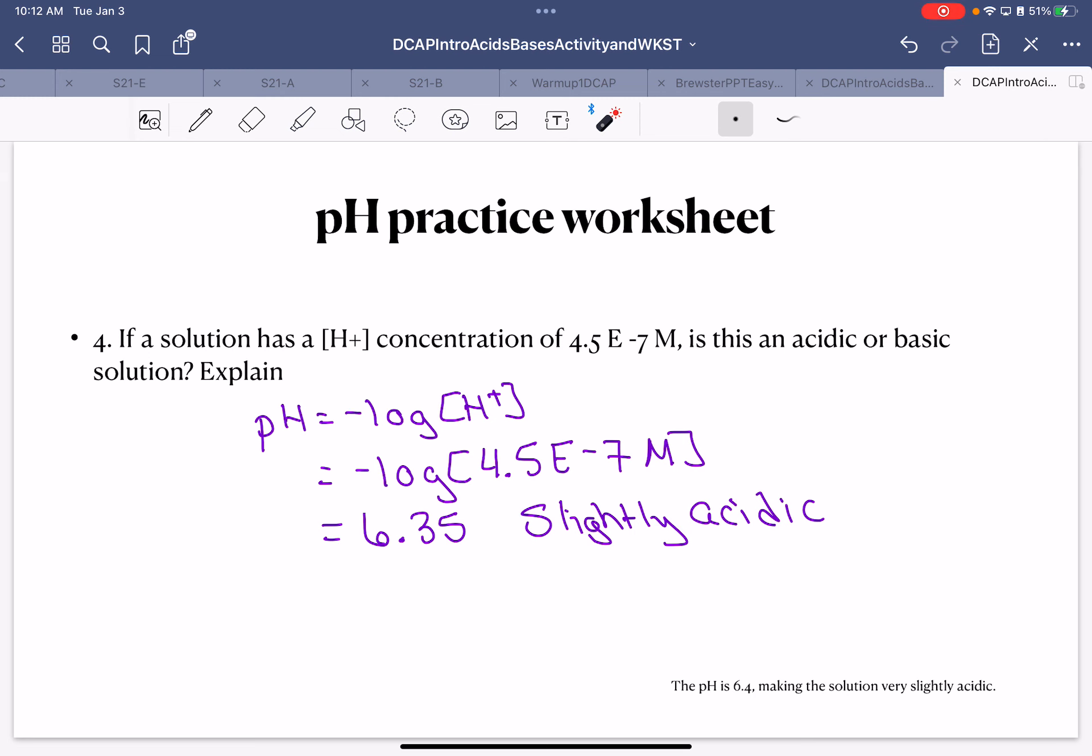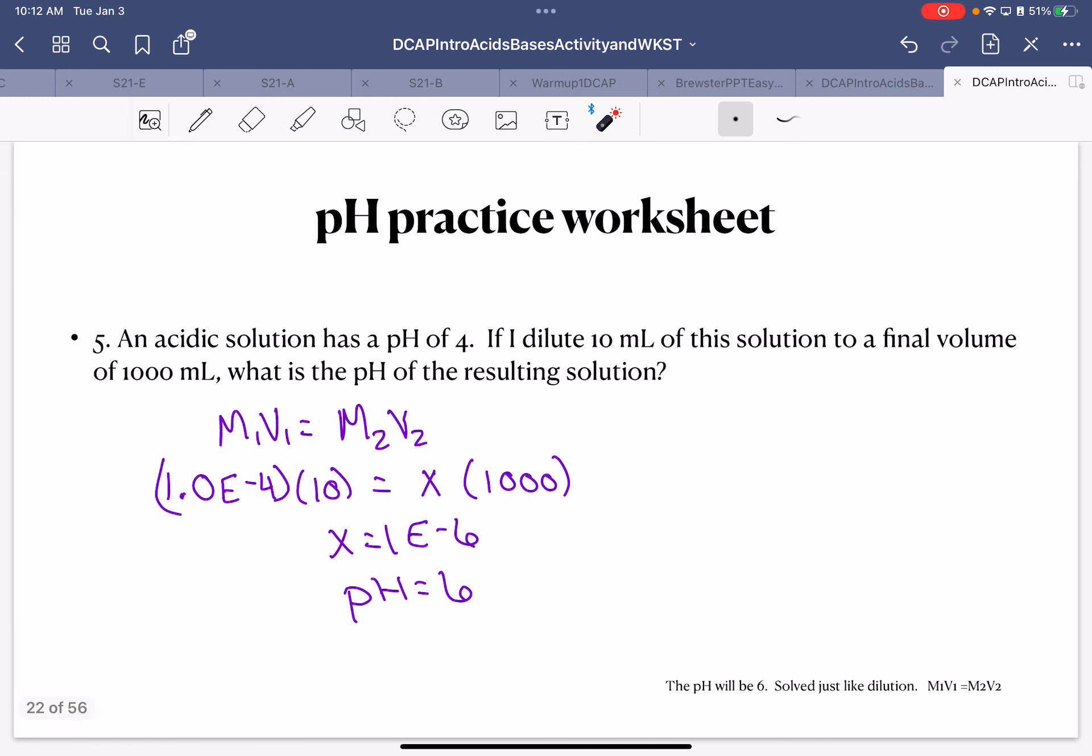An acidic solution has a pH of 4. If I dilute 10 mL of this solution to a final volume of a thousand milliliters, what's the pH of the resulting solution? So this one is our dilution equation: M1V1 equals M2V2.